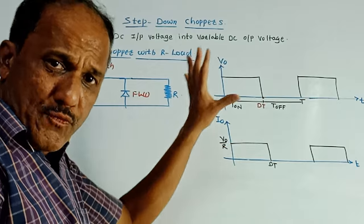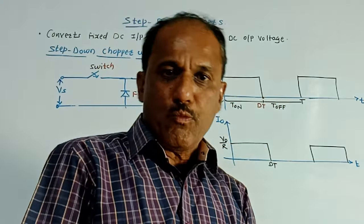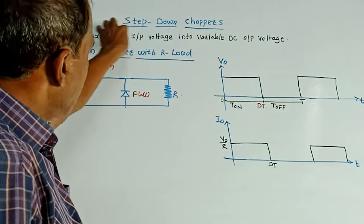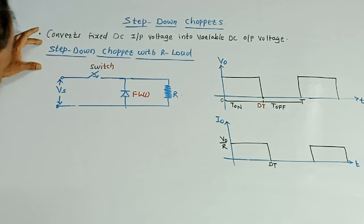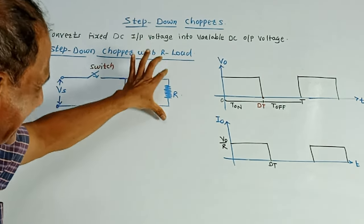The major two types of choppers or DC to DC converters are step up choppers and step down choppers. In this session, we'll discuss the step down choppers. So first part is step down chopper with R-load, R-load means resistive load.